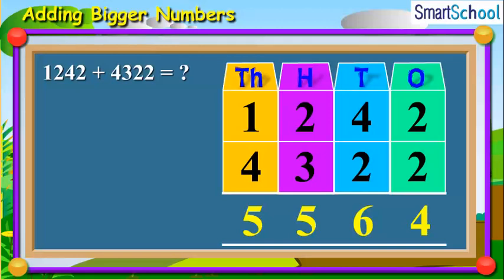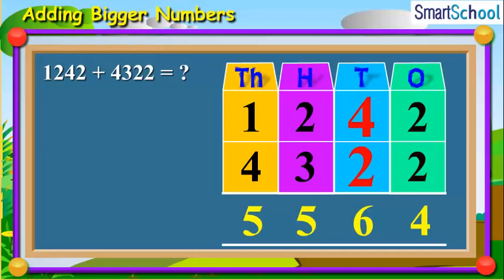As already studied, we start from the rightmost digits, so that while adding numbers, we will first add the ones digits together, then the tens digits, and so on.